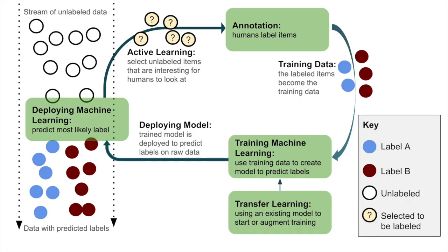A typical human-in-the-loop feedback system looks something like this: you have a deployed machine learning model, you employ active learning — the main topic of this talk — to identify the most interesting items for human review, humans annotate those items creating training data, and then you redeploy your model. You can also use transfer learning, which takes existing models and adapts them to your case to kickstart or augment the machine learning algorithm.